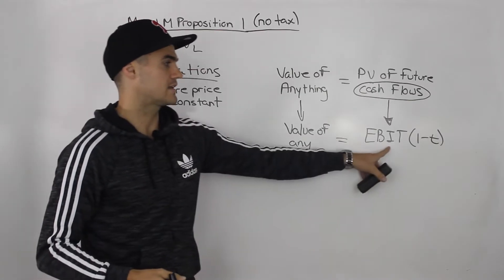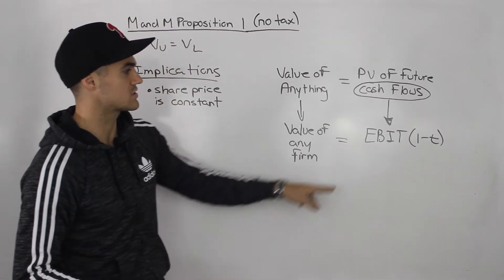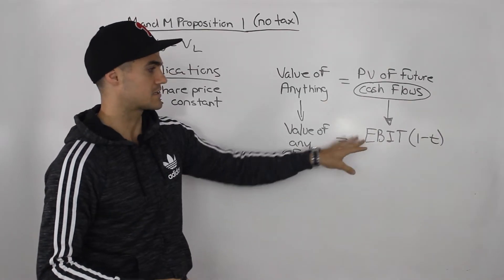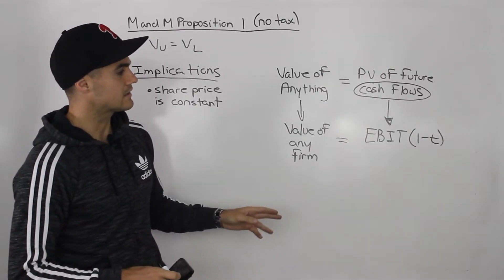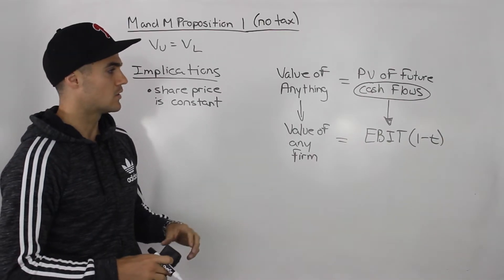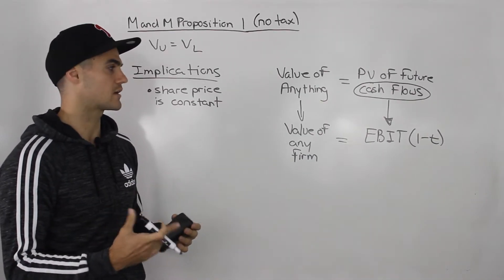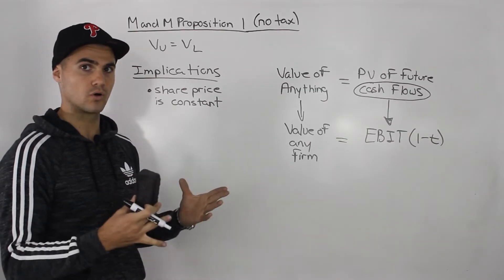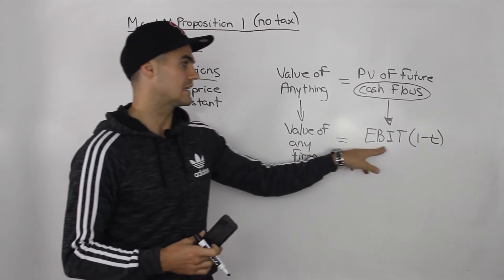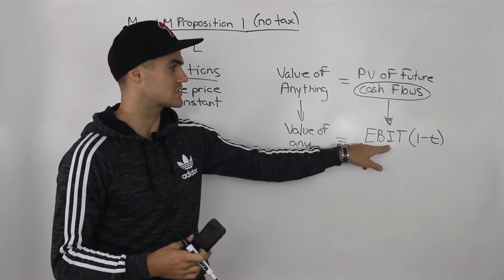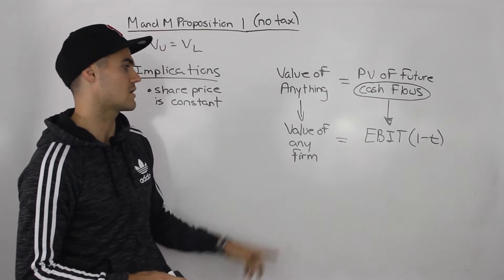Notice how we didn't subtract the interest here. So it's just earnings before interest and taxes, and then we take it on an after-tax basis. You may be asking yourself, why aren't you subtracting interest? Because then we would get to net income on the income statement. Net income, because we're subtracting interest to get there, would ignore the bondholders. Net income is more a representation of what the shareholders are getting. But since we're looking at the firm as a whole, we have to include the bondholders and the shareholders. So taking earnings before interest and taxes and keeping that interest in, then taking that figure on an after-tax basis gives us a good representation for the cash flows of any firm.